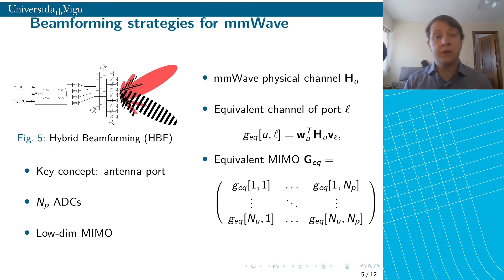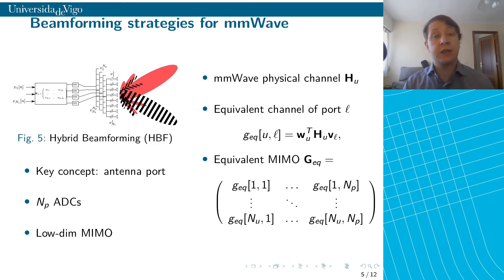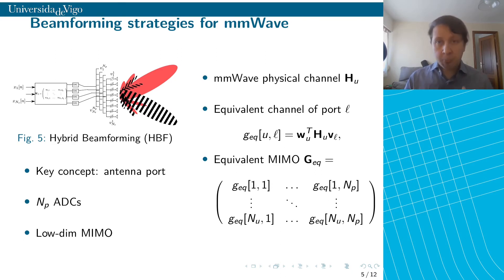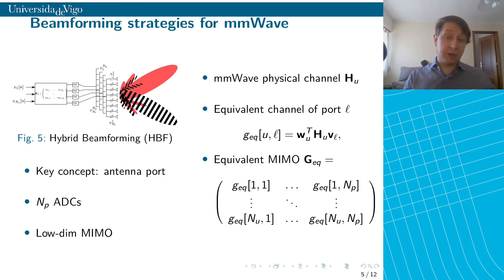As a compromise, hybrid beamforming tries to get the best of both worlds. A key concept in 5G is the concept of antenna port: one antenna port is one connection to the antenna array that has a separate analog-to-digital converter. So with NP antenna ports, we can use in low dimensions some of the digital MIMO techniques we know, and each of the antenna ports is fed to the antenna array using a different network of splitters implementing a different analog beam. For example, if the millimeter-wave physical channel in analog is H and the analog beamforming vectors are U and V, each antenna port experiences an equivalent scalar channel gain following this expression. When we have several antenna ports at the transmitter or receiver, we can build an equivalent low-dimensional digital MIMO channel of this form.